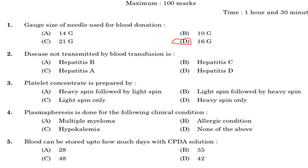Third question: platelet concentrate is prepared by. Option A: heavy spin followed by light spin. Option B: light spin followed by heavy spin. Option C: light spin only. Option D: heavy spin only. Answer is Option B, light spin followed by heavy spin. Centrifuge the blood using light spin, then transfer the supernatant plasma containing platelets into another bag, then centrifuge again at higher speed to obtain platelet concentrate.